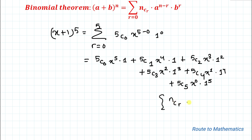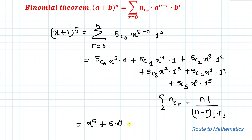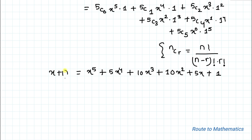We know that nCr = n! / ((n-r)! · r!). Applying this formula: 5C0=1, 5C1=5, 5C2=10, 5C3=10, 5C4=5, 5C5=1. So the expanded form of (x+1)^5 is x^5 + 5x^4 + 10x^3 + 10x^2 + 5x + 1.